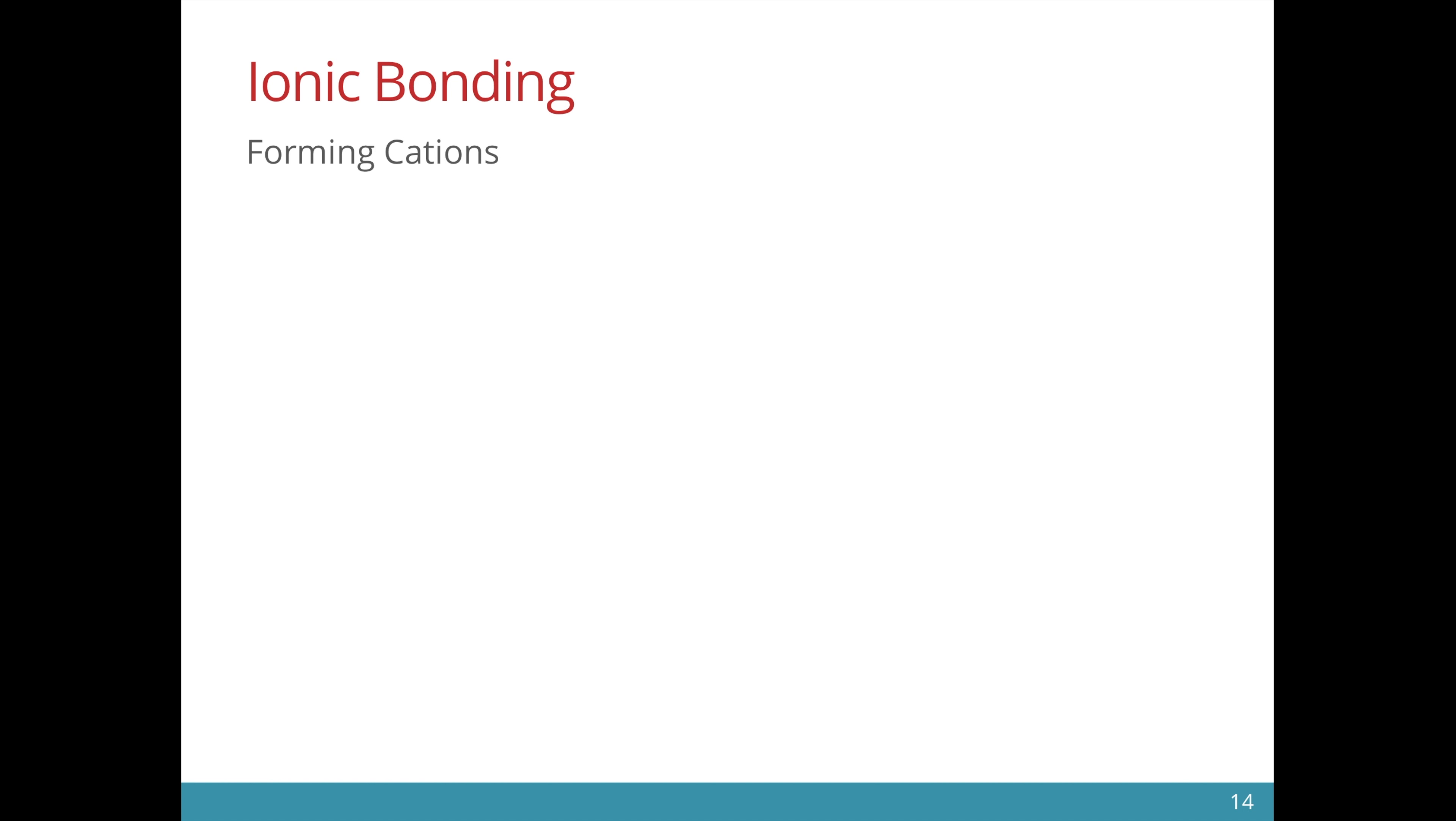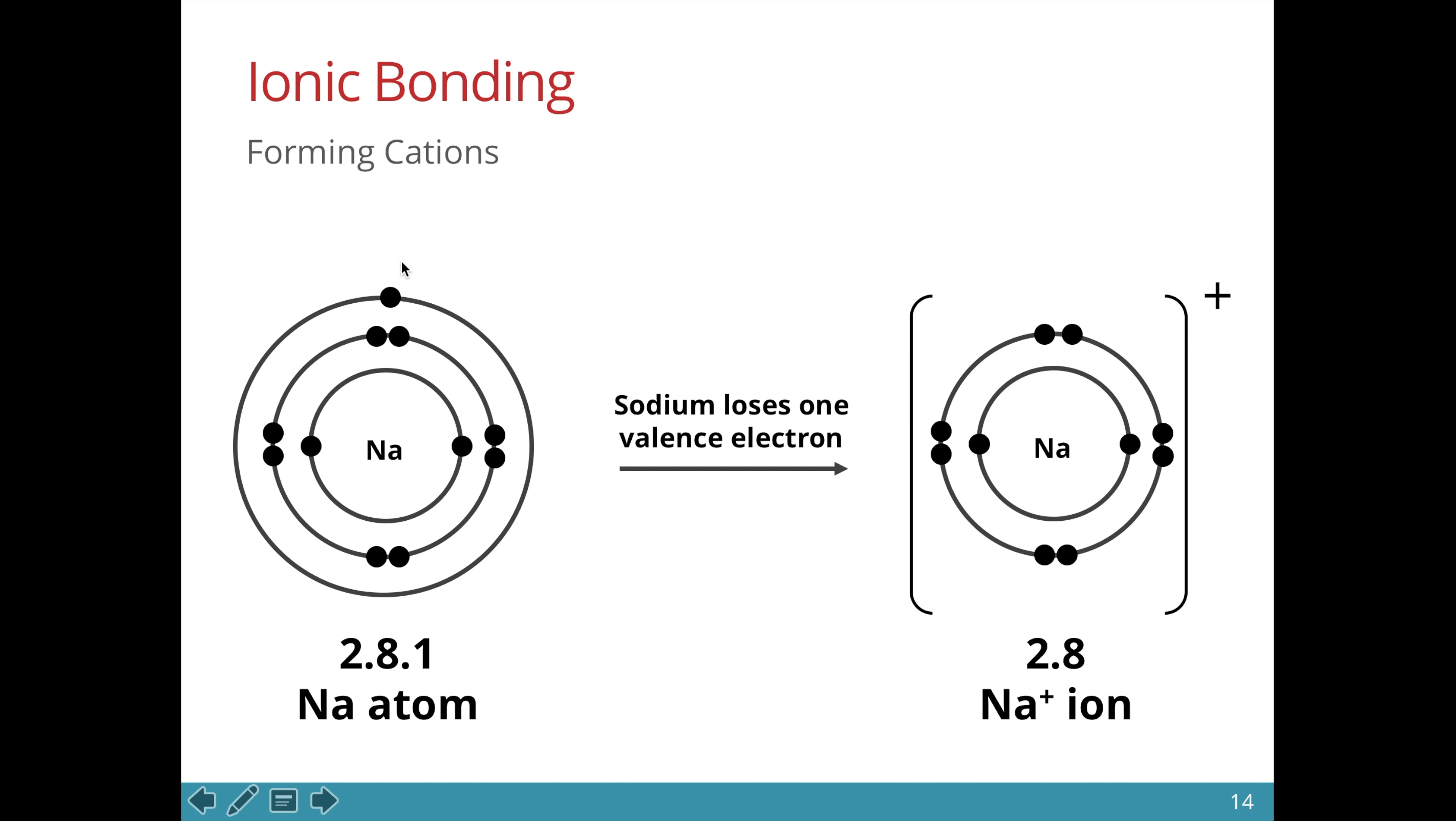Cations are positively charged ions. They are formed when an atom loses electrons. This is the sodium atom. It has 1 valence electron. This electron can be lost to form an ion. And notice that in the ion, there is 1 less electron shell. And the outermost shell is now fully filled, just like that of a noble gas.